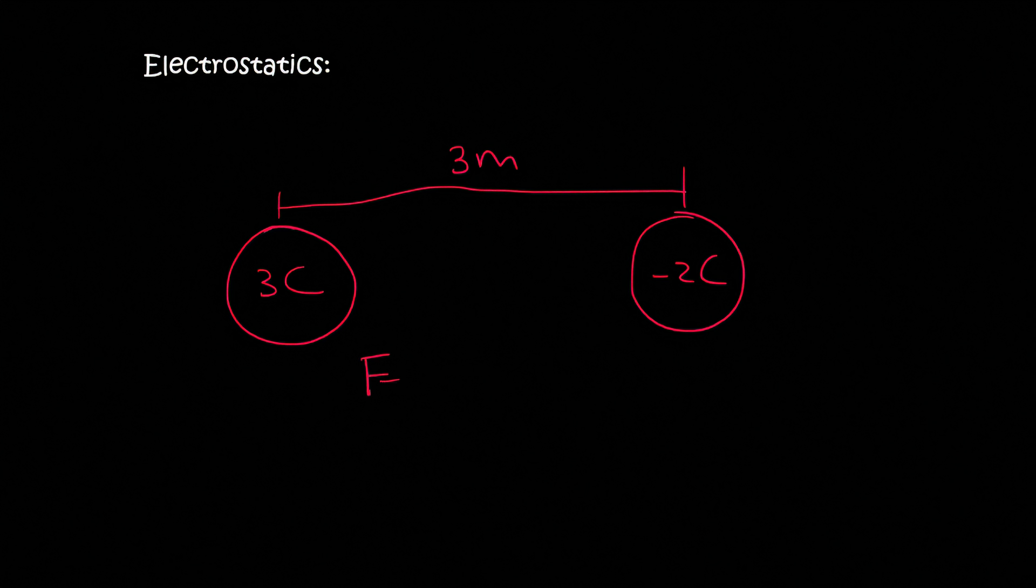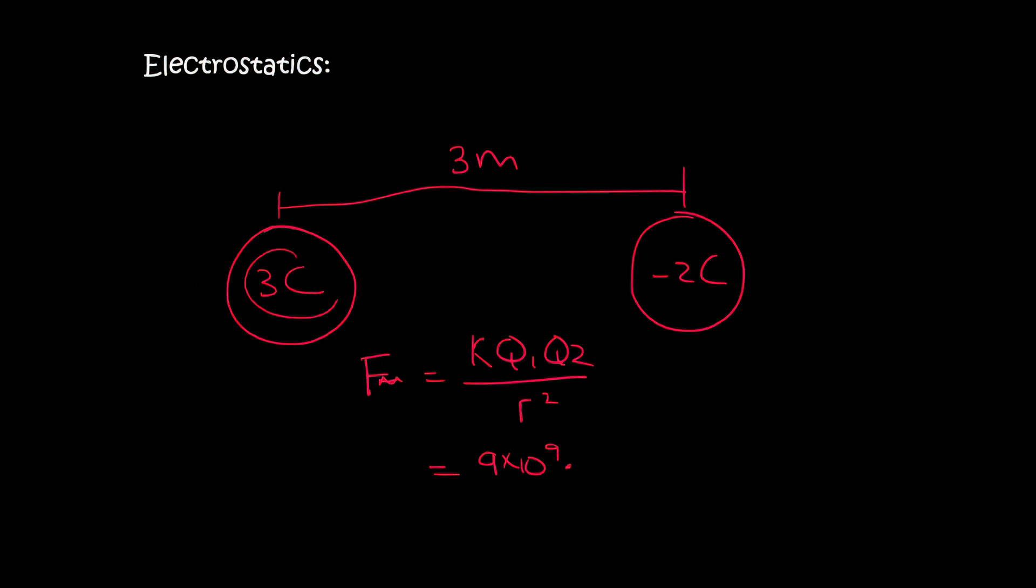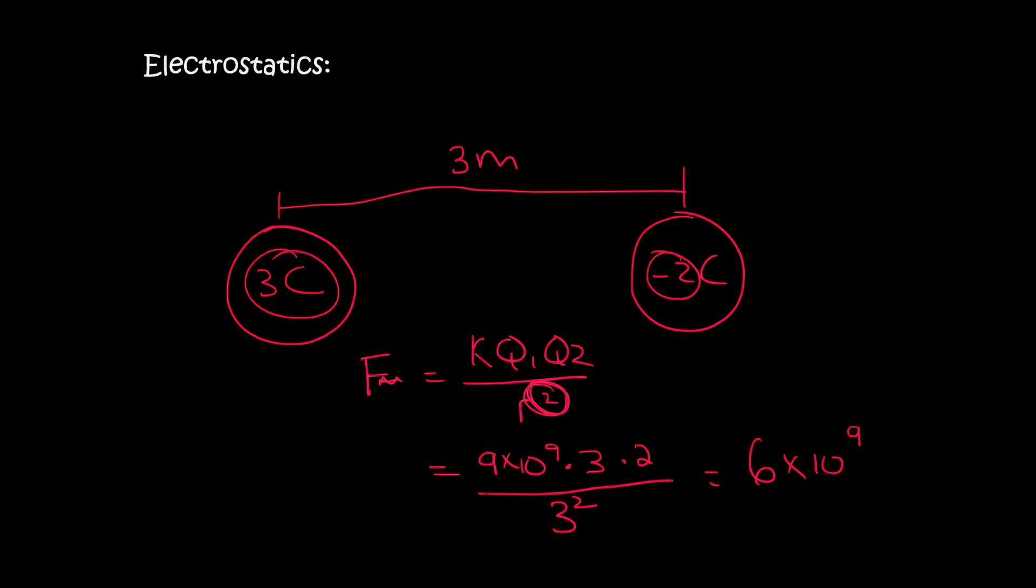So, the formula, which is obviously always going to be given to you, is F equals to k q1, q2, over R squared. k is nine times ten to the nine. It's a constant on your formula sheet. q1, it doesn't matter which one we choose. Let's just take that one. It's three Coulombs. This one is minus two, but we do not put the minus two over there. The distance between them is three, and then many students forget the to the power of two. And that's going to give you a six with nine zeros.